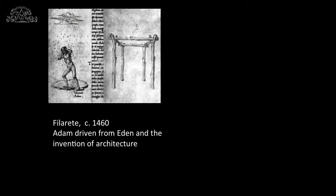In Filarete's treatise of about 1460, the origins of architecture are traced to the moment of the expulsion of Adam from Eden. Now it rains on Adam's body, and in sheltering his head from the rain with the vault of his two hands, he originates the archetype of all architecture. Filarete posits the idea of a building literally as a living body, which is conceived in the union of patron and architect, who carries it for nine months, gives birth to it, and nourishes it as a living creature with entrance and exit orifices and internal organs and structure, all needing to be attentively cared for like a child. Filarete's thinking was not alien to the world of the pre-modern body.